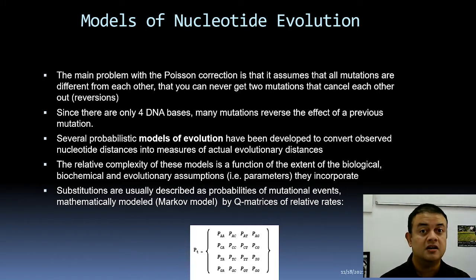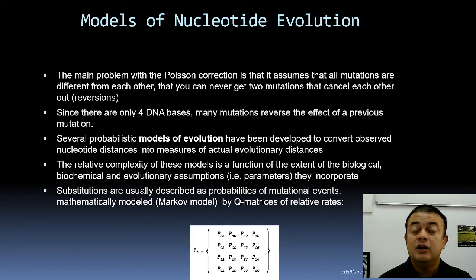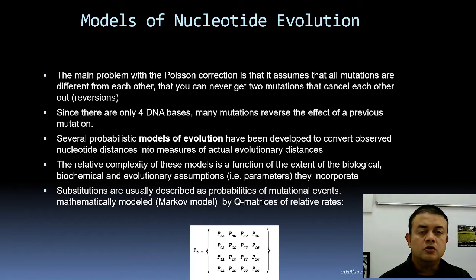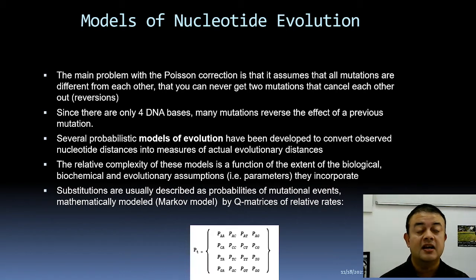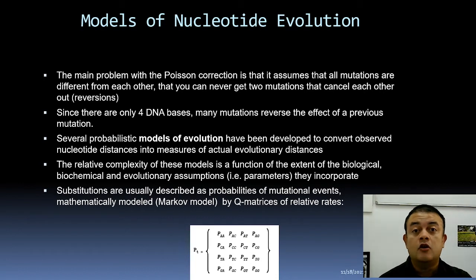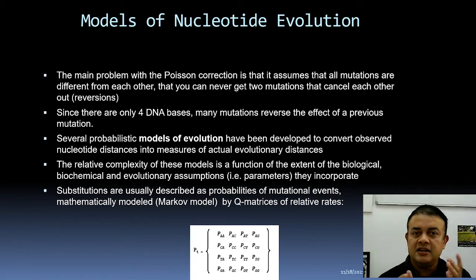These models are probability-based mathematical equations. The relative complexity of these models is a function of the extent of biological, biochemical, and evolutionary assumptions — the so-called parameters — that they incorporate into the equation.